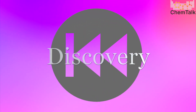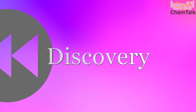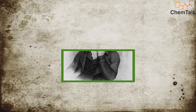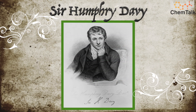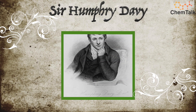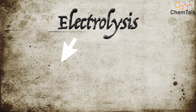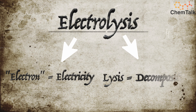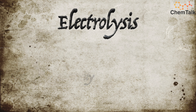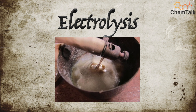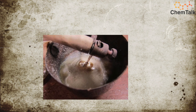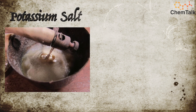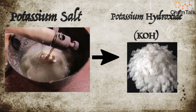Let's rewind back in time to learn about the origins of the metal potassium. In 1807, Sir Humphrey Davy used electrolysis — derived from the Greek words 'electron,' meaning electricity, and 'lysis,' meaning decomposition — to break down molten caustic potash. Caustic potash is a potassium salt made up of potassium hydroxide, or KOH.